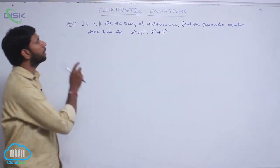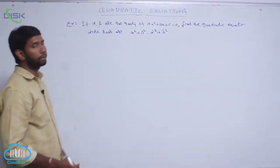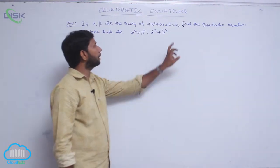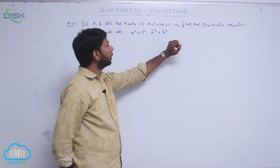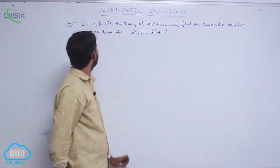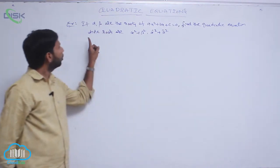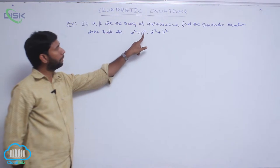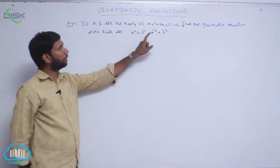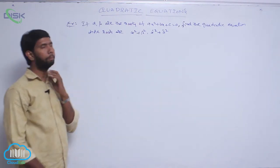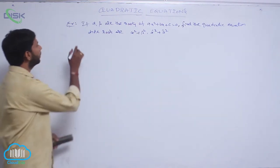Alpha and beta are the roots of equation ax² + bx + c = 0. Find the quadratic equation whose roots are alpha² + beta² and alpha⁻² + beta⁻².